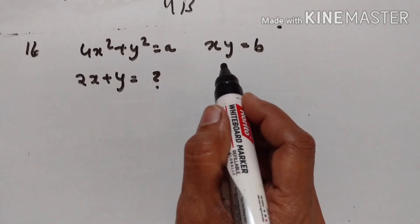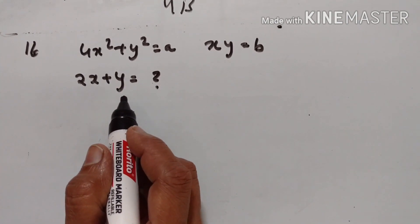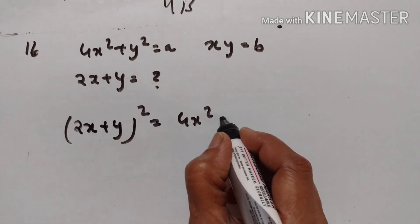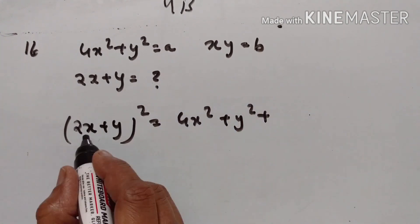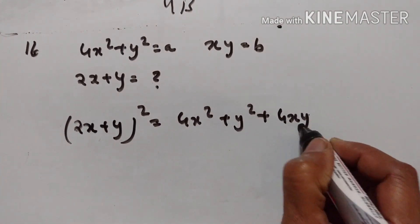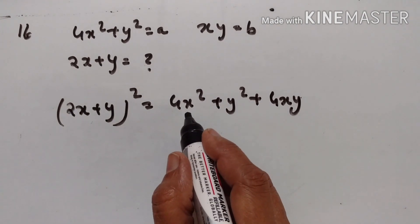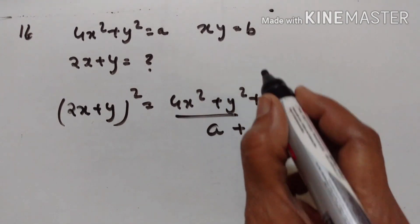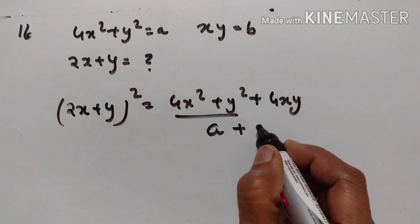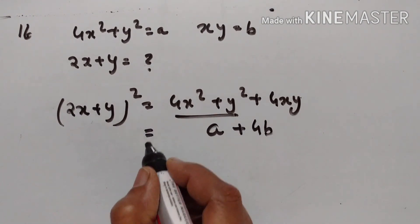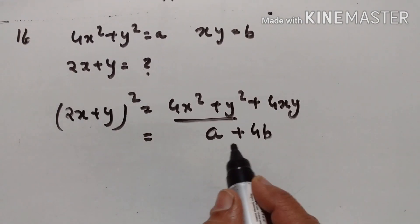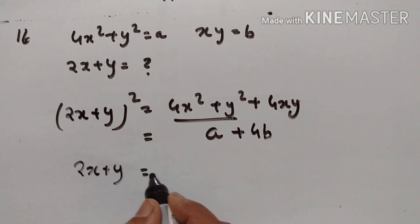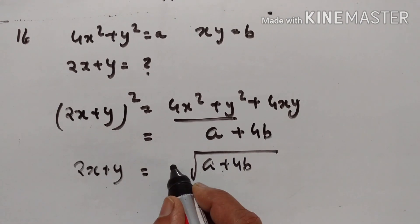Given 4x squared plus y squared equals a and xy equals b, we have to find the value of 2x plus y. So 2x plus y squared equals 4x squared plus y squared plus 2 into 2x into y, that is 4xy. Since 4x squared plus y squared equals a and 4xy equals 4b, we get 2x plus y squared equals a plus 4b. Taking the square root on both sides, 2x plus y equals plus or minus square root of a plus 4b.